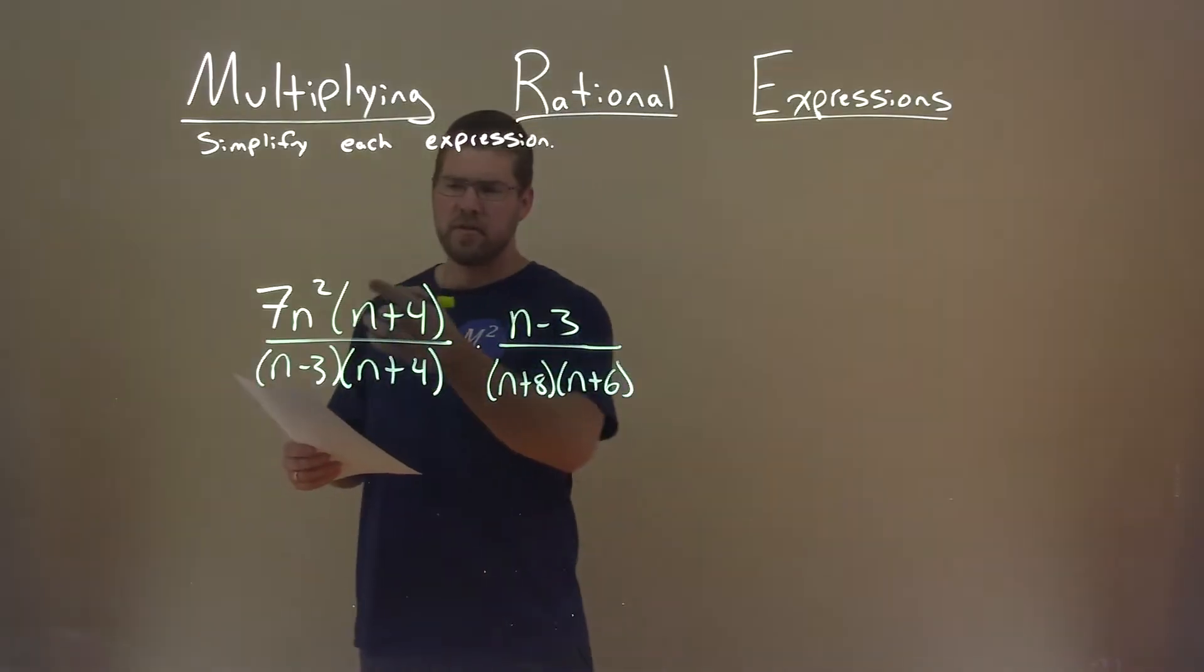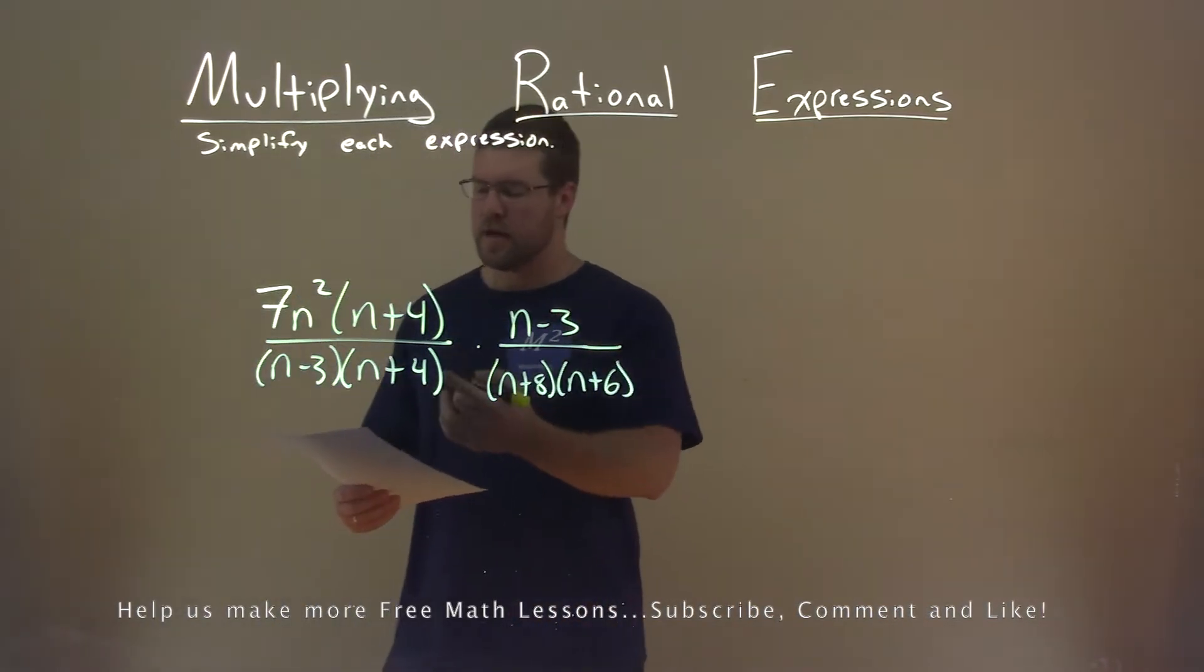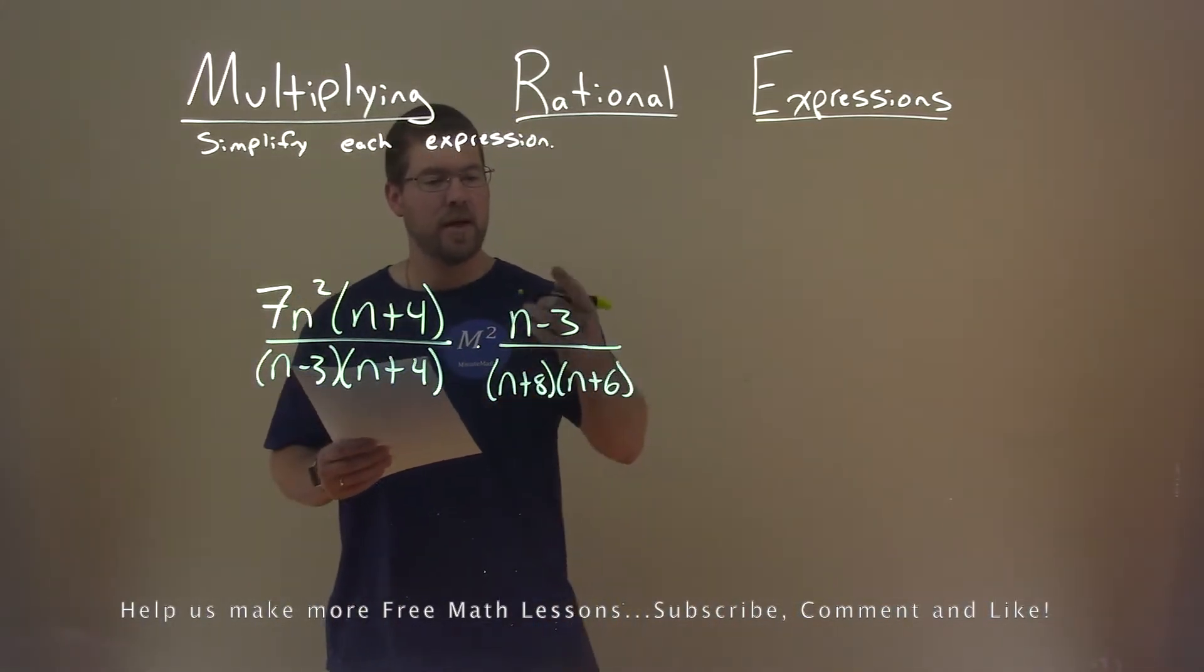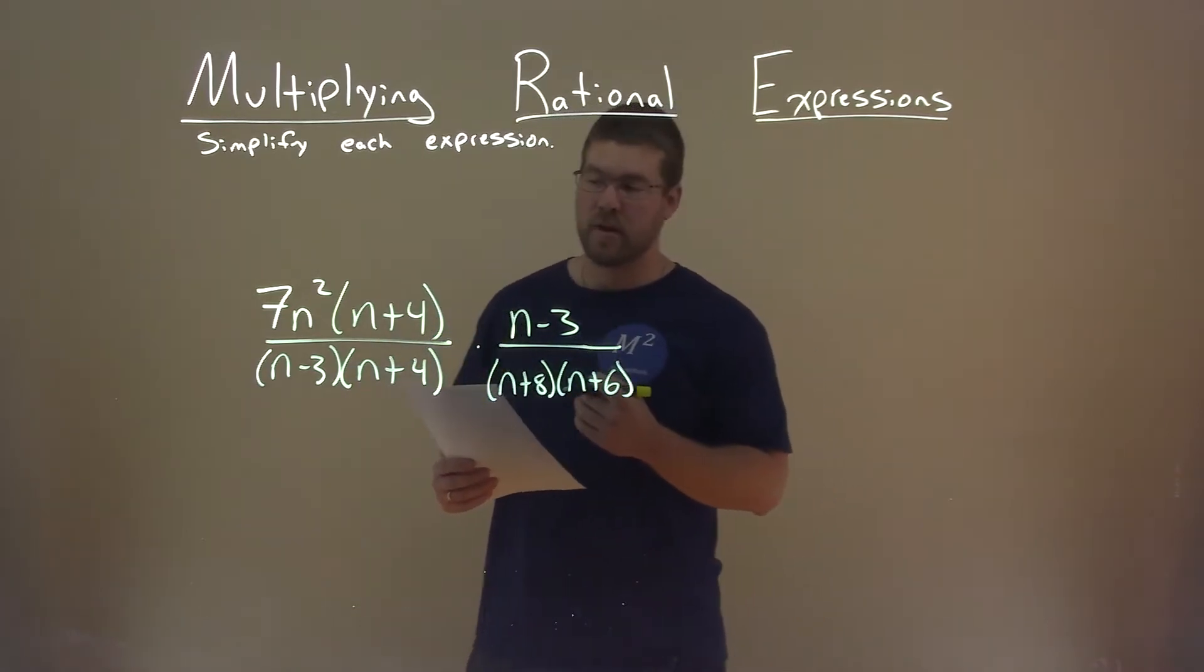We're given this problem right here. 7n squared times n plus 4 divided by n minus 3 times n plus 4 times n minus 3 divided by n plus 8 times n plus 6. And we need to simplify this.